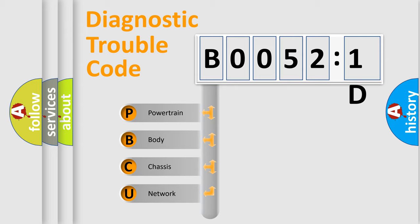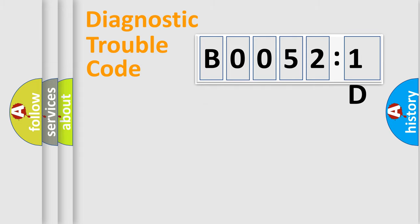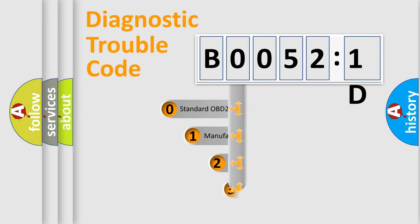We divide the electric system of automobile into the four basic units: Powertrain, Body, Chassis, Network. This distribution is defined in the first character code.